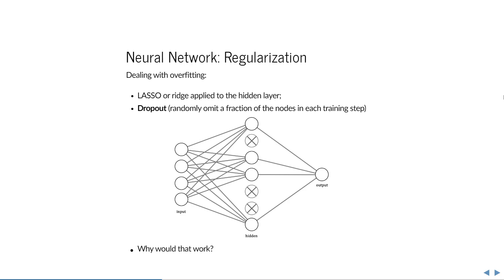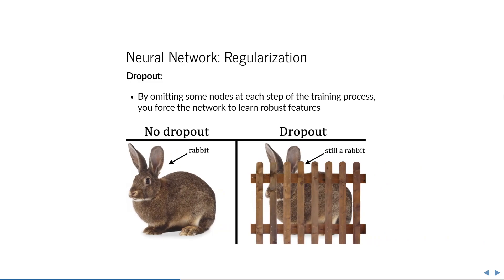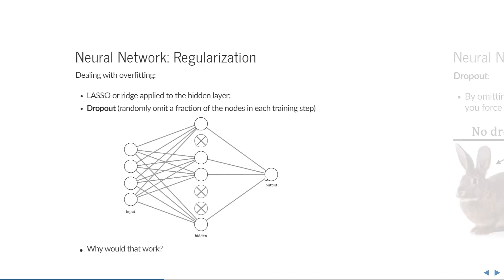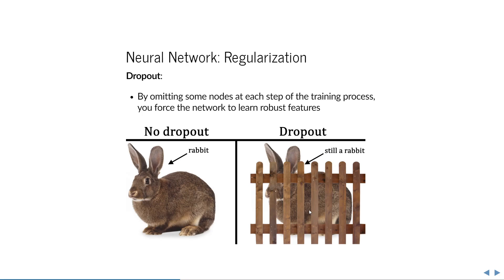Why does dropout work? By omitting some nodes at each training step, you force the network to learn robust features. Without dropout, anything in the source material would help — whether a shadow, or that the center is darker than the corners. But if you randomly remove what the network is allowed to use, it must learn features that are actually important to the output. For example, a network predicting whether there's a rabbit in a picture with dropout might learn robust features like the shape of the ears or overall shape, recognizing a rabbit even if partially covered or in different lighting.